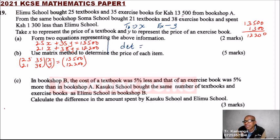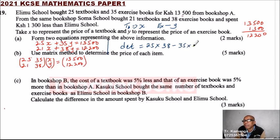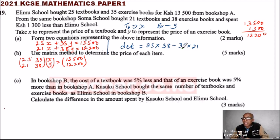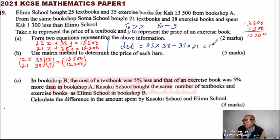The determinant of this matrix equals: you multiply the elements of the main diagonal — that is 25 multiplied by 38 — then minus 35 multiplied by 21. Using your calculator, that gives you 950 minus 735, which equals 215.